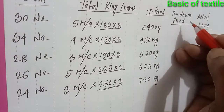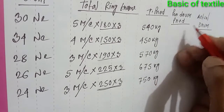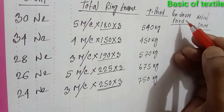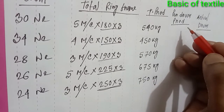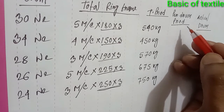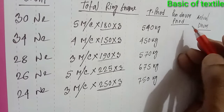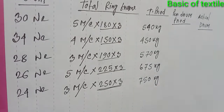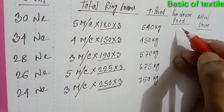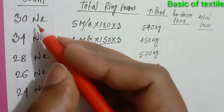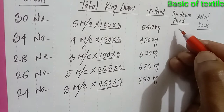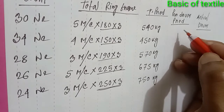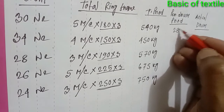Next, per drum production. Autocone machine — one drum production. Autocone machine egg drum production — I mean to run a lump. Suppose for 30 count, per machine — but upon one drum production will be 28 kg.